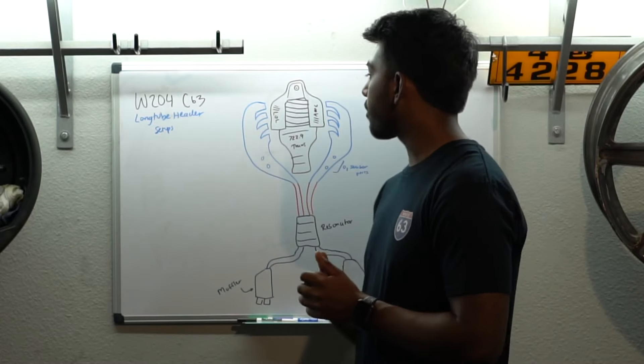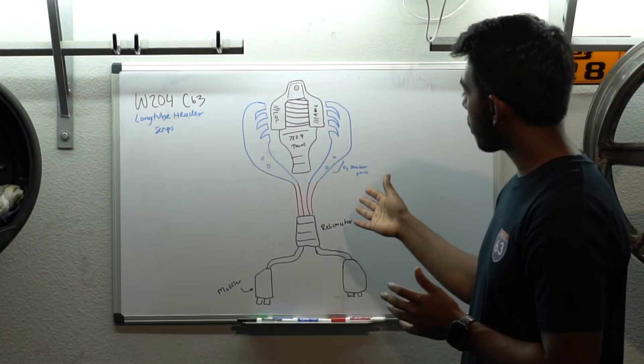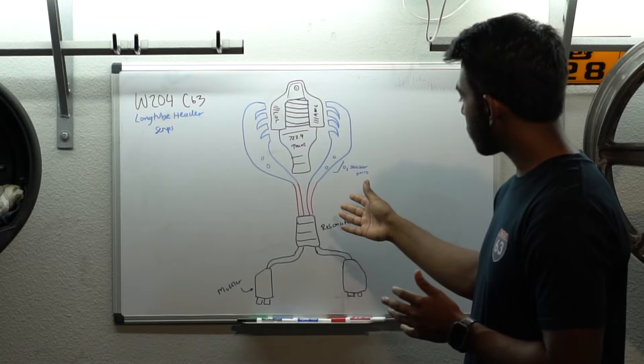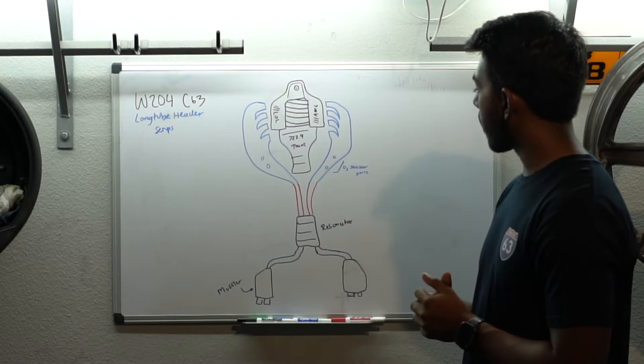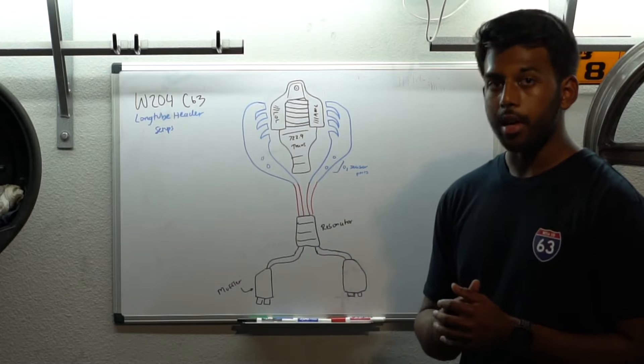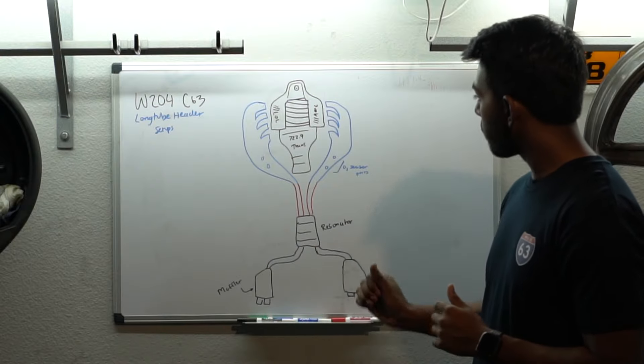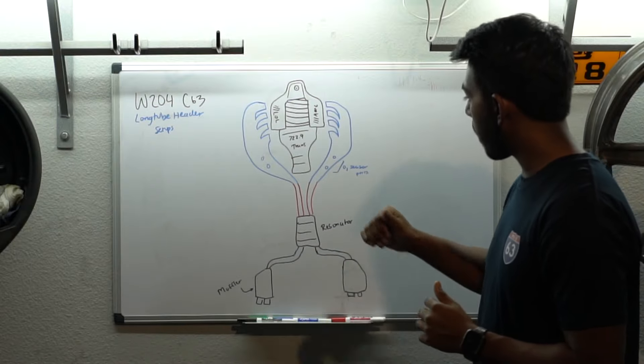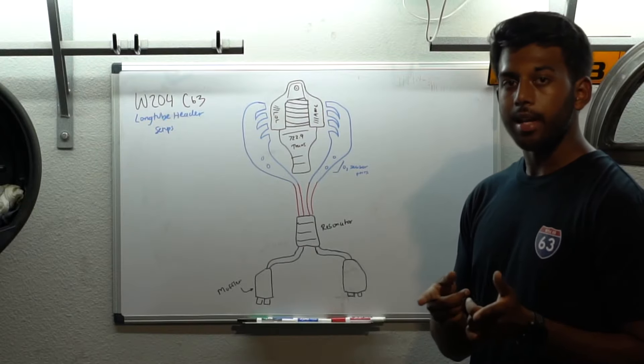Now, for the first setup, we have MBH headers paired with straight pipes that take place of the secondary catalytic converters with the stock resonator. So, basically, resonator back, everything's stock. But, MBH headers and straight pipes for secondary cats. Here's what that sounds like.